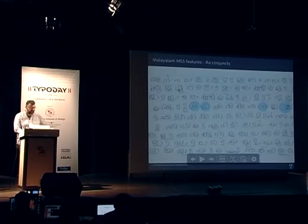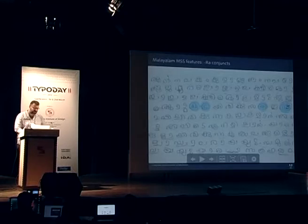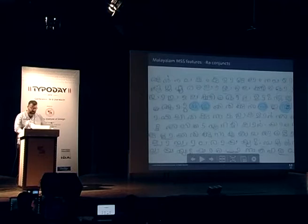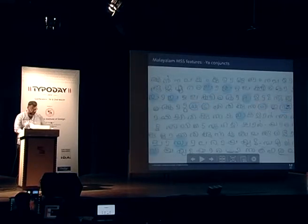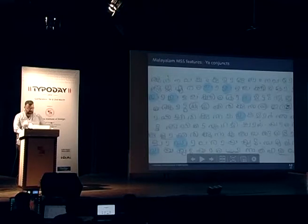And one specific feature that is not particularly unique to Malayalam only but in Malayalam there's this very peculiar way of forming conjuncts that end in the consonant ra with the ra that loops up and around the conjuncts. And also there are some interesting formations of conjuncts that end in ya with the loop going below and back up to the right.